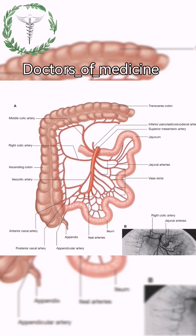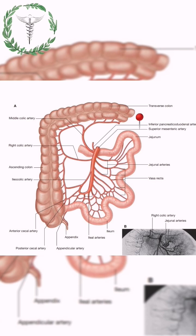As we continue the blood supply of the GIT, in this video we're going to be focusing on the superior mesenteric artery, which supplies the contents of the midgut.